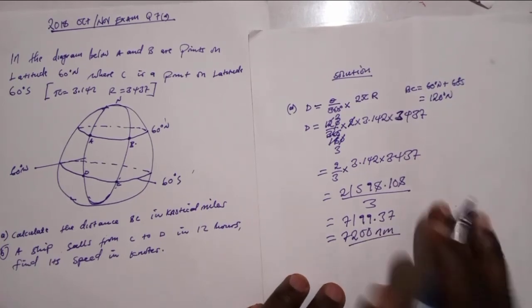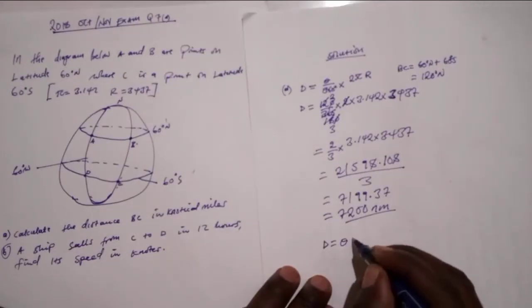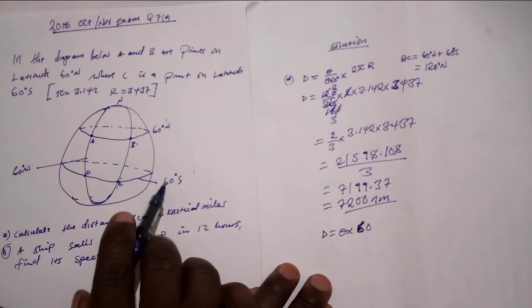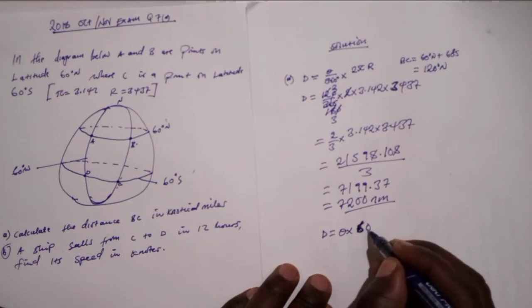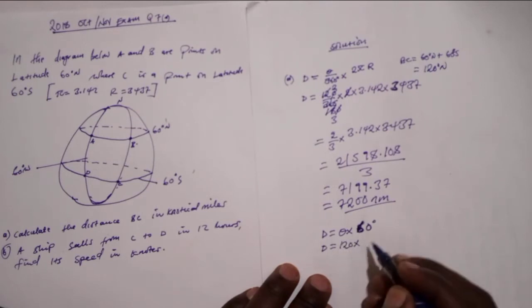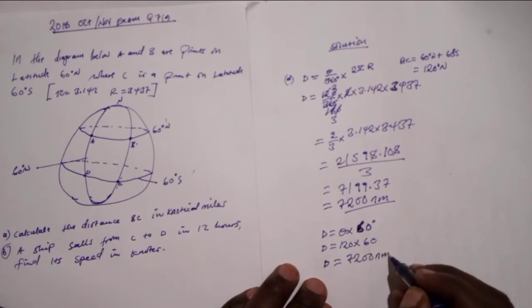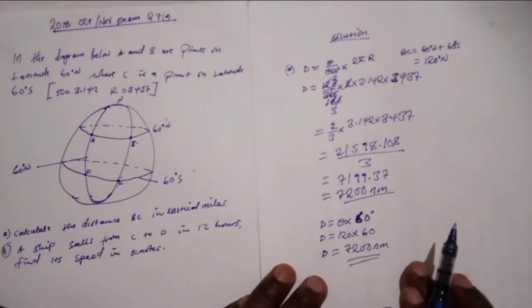But there is another way also of finding this distance BC, in which the distance is equal to theta multiplied by 60. We have 120 degrees, so d equals theta. We have 120 multiplied by 60, which it will be d equals 7200 nautical miles. This is the easiest way of finding the distance BC.